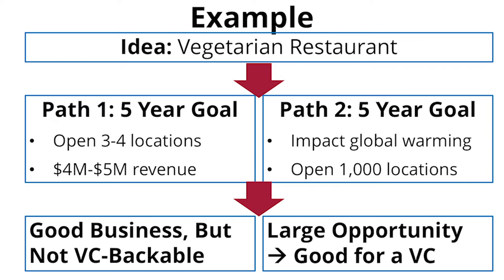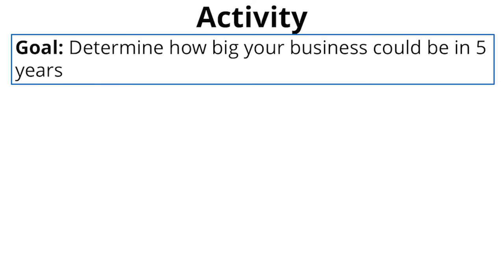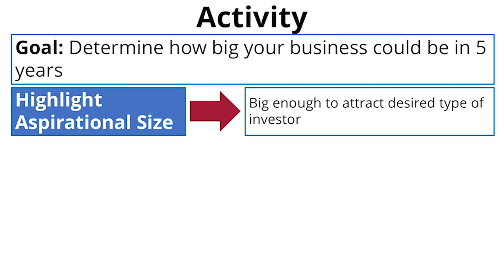The way you build each of these two businesses is completely different, and the kind of investor you get is different. So the first thing we want to do is look at what is the aspirational opportunity you have. In this activity, what we're going to do is take the first step of the profit exercise and have you look at how big is the opportunity you're pursuing. What's important here is that you look out five years and say, I think this opportunity can be of this size.